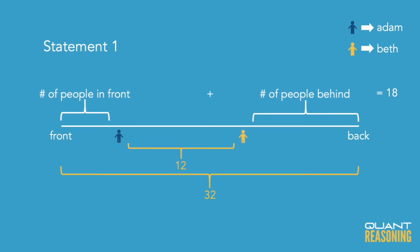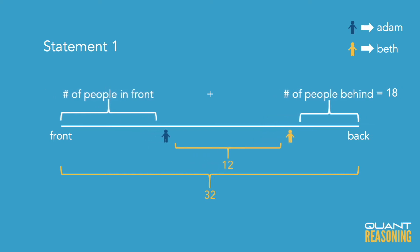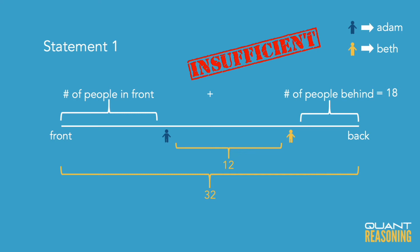But how many people are behind Beth? We still don't know. You can visualize moving the 14 people, including Adam and Beth, forward and backwards in the line, and that's going to change the number of people behind Beth. So statement one is not sufficient on its own, and we can go ahead and eliminate the answer choices that claim that it is.